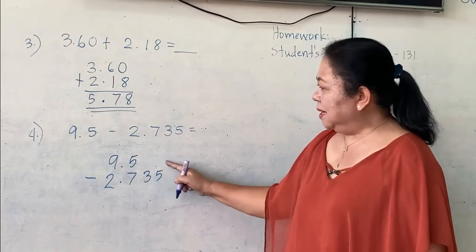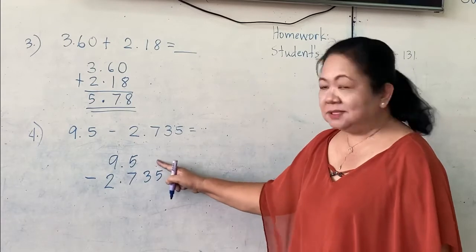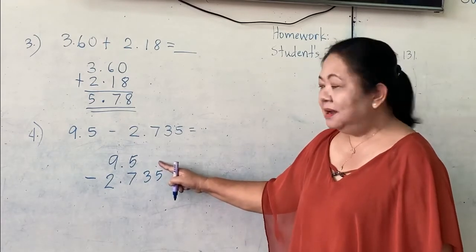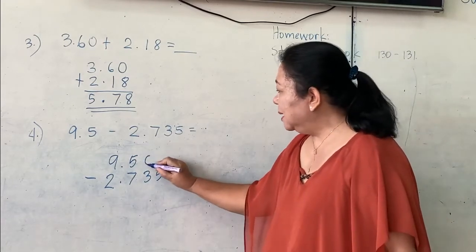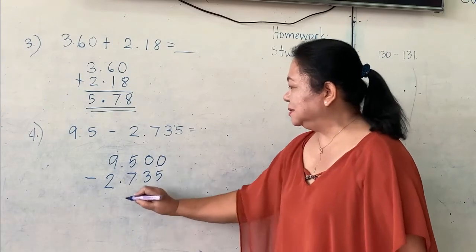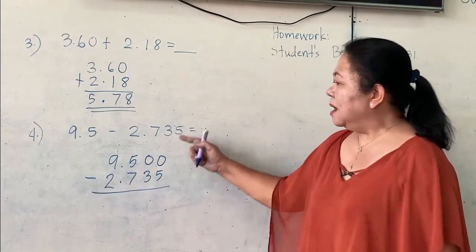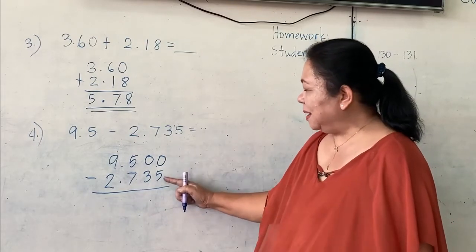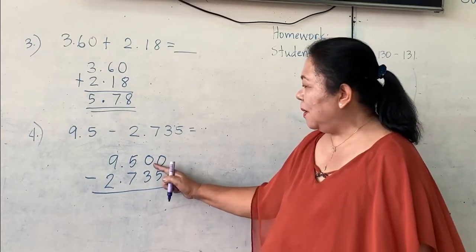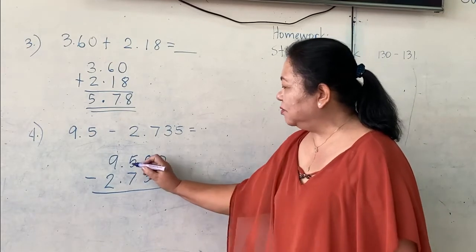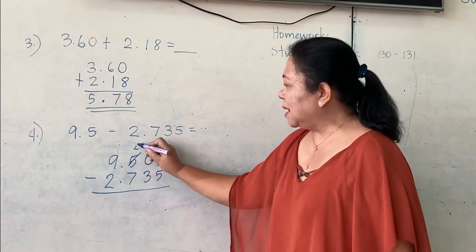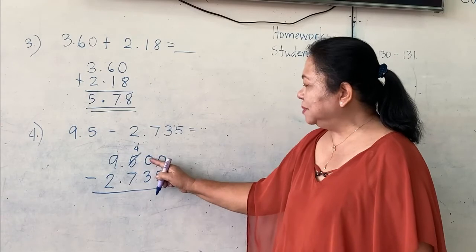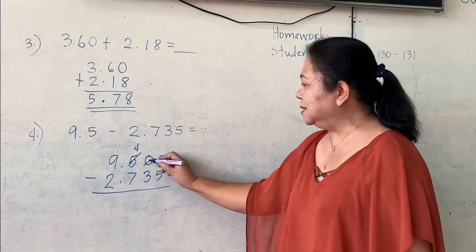Here, you will notice there are no numbers here. No digits here. So, we will write 0s. And then, you will subtract from the rightmost digit. 0 minus 5 cannot. So, we will borrow 1 from 0. And this 0 will borrow 1 from 5. 5 will become 4. This will become 10. But we will give 1 here.